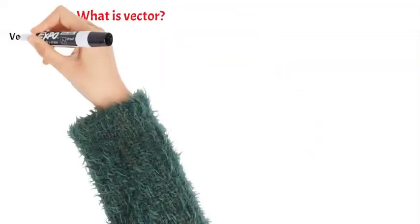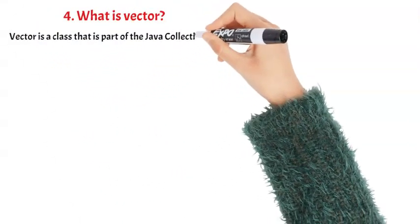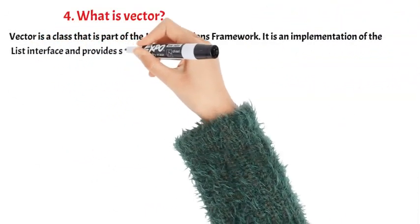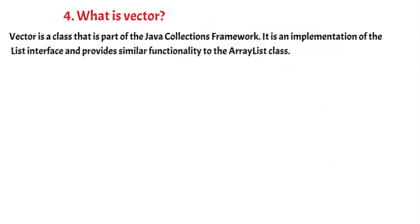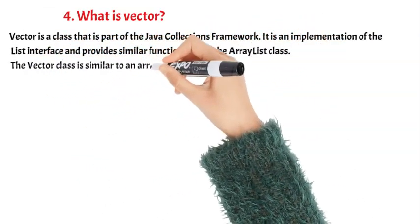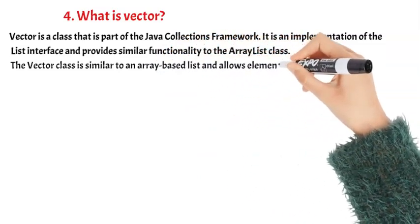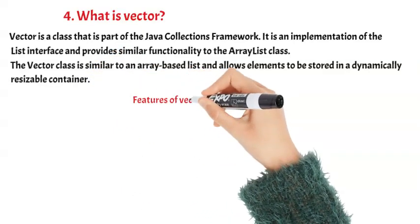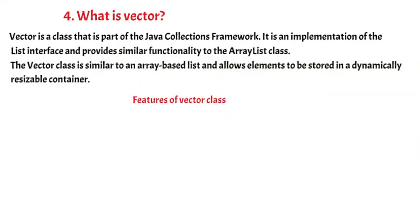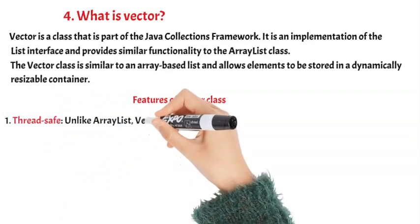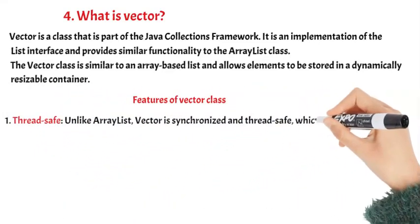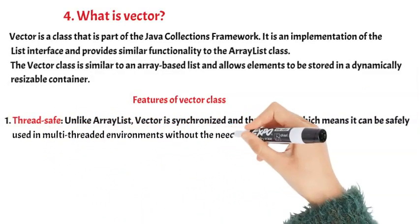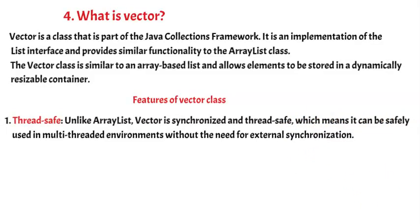What is Vector? Vector is a class that is part of the Java Collections Framework. It is an implementation of the List interface and provides similar functionality to the ArrayList class. The Vector class is similar to an array-based list and allows elements to be stored in a dynamically resizable container. Key feature 1: Thread-Safe — Unlike ArrayList, Vector is synchronized and thread-safe, which means it can be safely used in multi-threaded environments without the need for external synchronization.